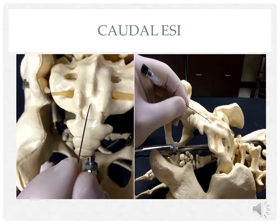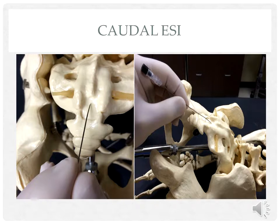After the sacral hiatus has been located, 1% lidocaine is used to infiltrate the skin and subcutaneous tissue. A 20-gauge Tuohy epidural needle is advanced cephalad towards the sacral hiatus. It is common for the needle tip to contact the periosteum of the sacral canal. If this occurs, the needle is withdrawn slightly and advanced at a different and often more shallow angle. Initially, resistance is felt as the needle enters the sacrococcygeal ligament, followed by a loss of resistance as the needle enters the caudal epidural space.